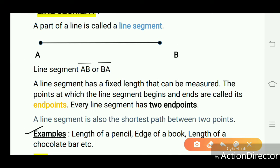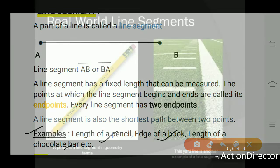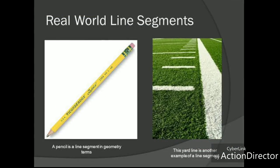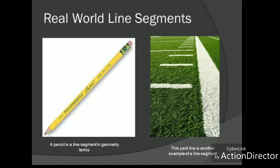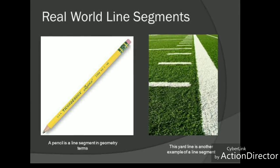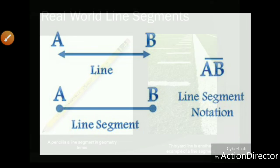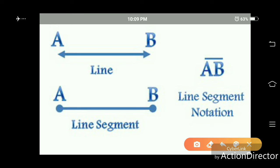In the figure above, A and B are the two endpoints of this line segment. Examples of line segments include the length of a pencil, the edge of a book, and the length of a chocolate bar. Difference between line and line segment: a line extends in both sides, whereas a line segment has two endpoints.